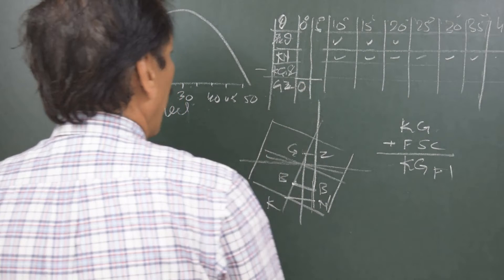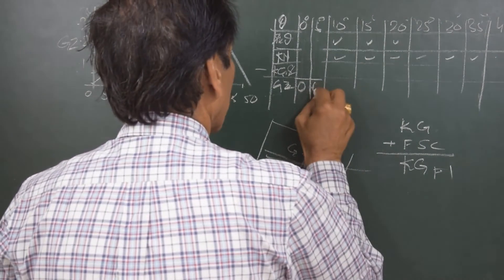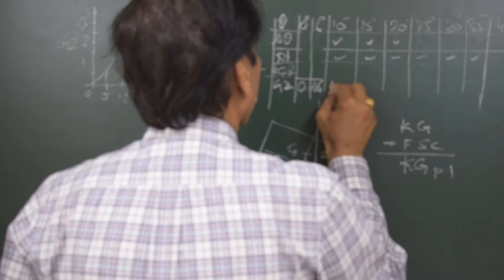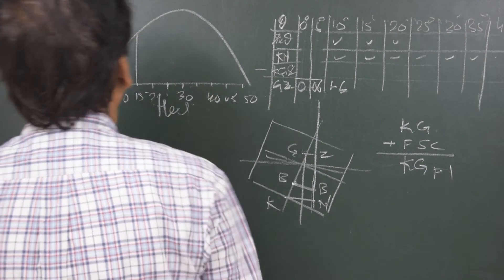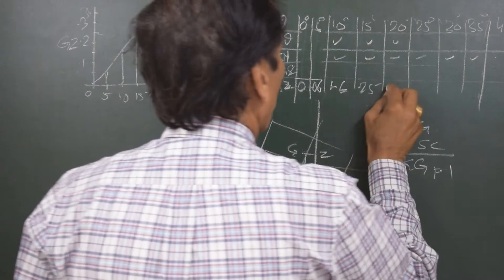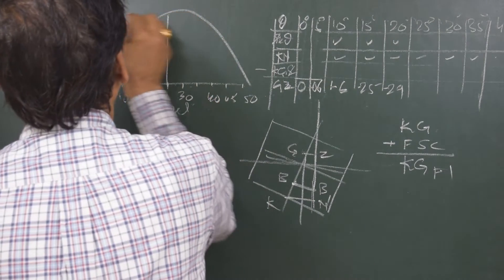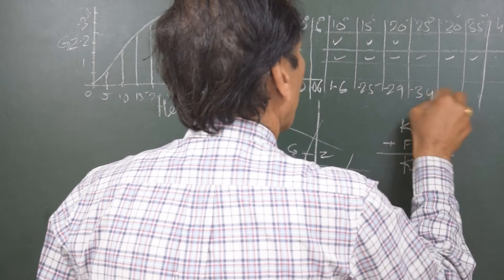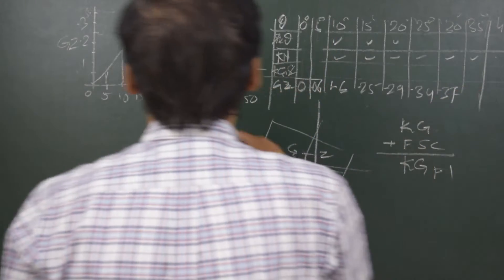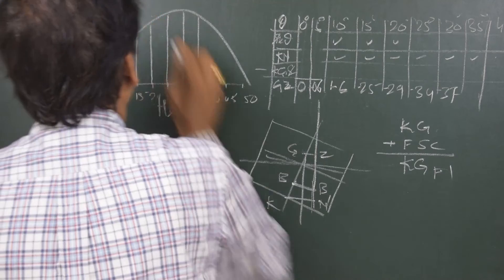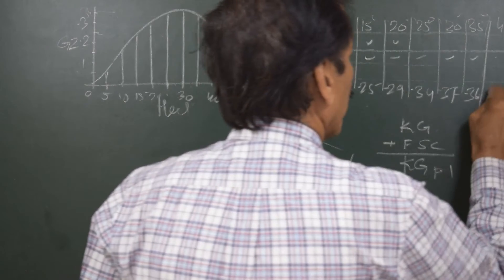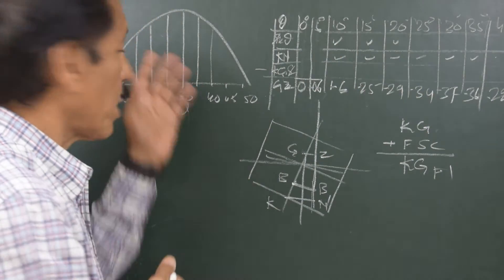Would give me the righting lever. Righting lever 0 at 0, at 5 degrees let it be 0.06. At 10 degrees let it be 0.16. At 15 degrees looks like 0.25. At 20 degrees 0.29, at 25 degrees it's 0.34, and 30 degrees it is 0.37, and at 35 degrees it is 0.35. So these are the values I have picked up from the table just to save the time.